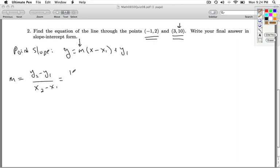Think of y2 as being 10 minus y1 is 2 over x2, which I can think of as 3, minus x1, negative 1. So, when the dust settles in the numerator, I get an 8. In the denominator, I get 4. 8 divided by 4 is 2.